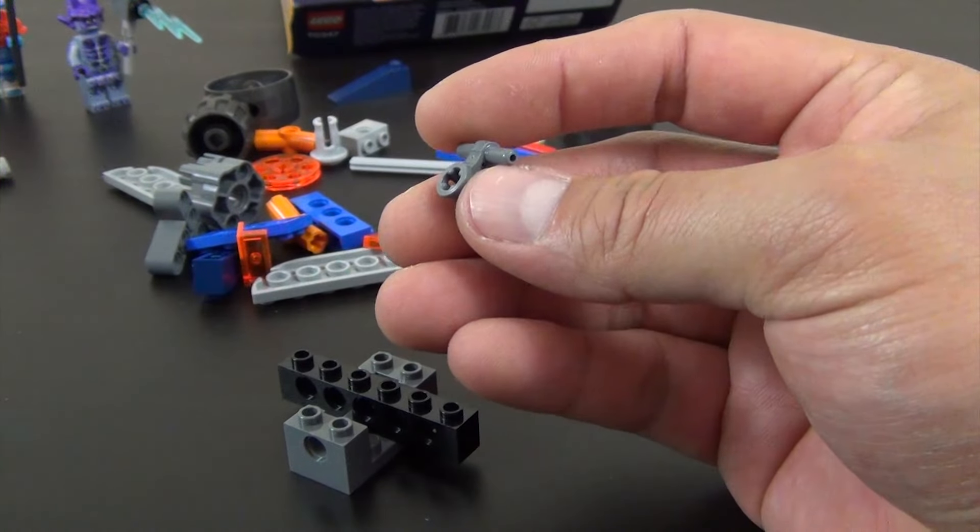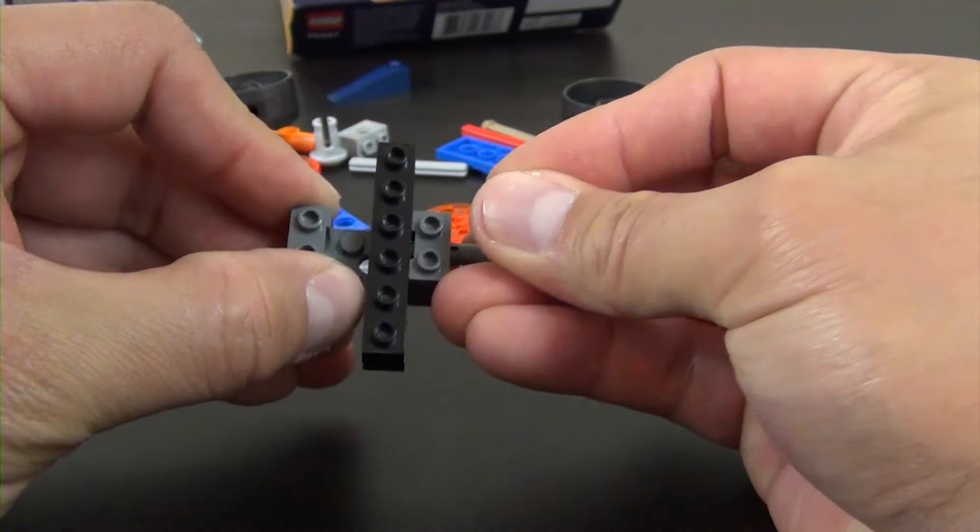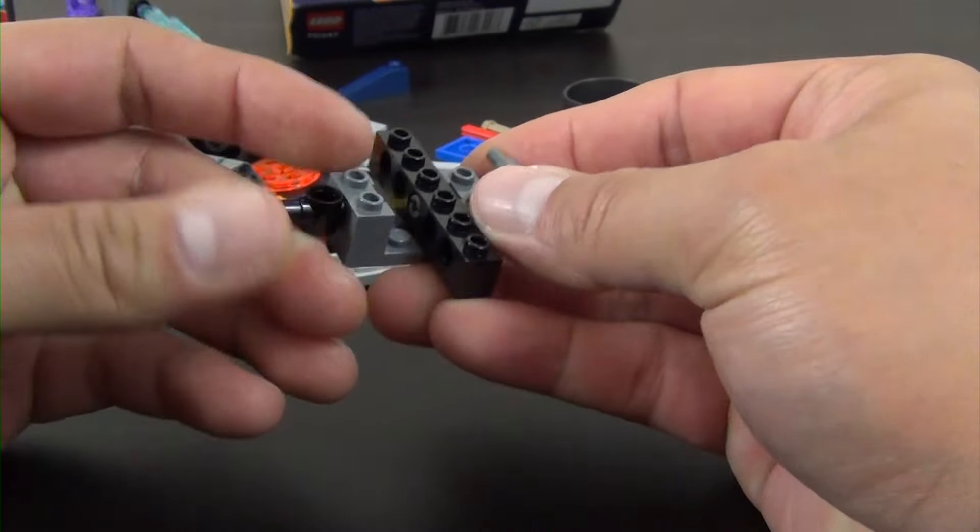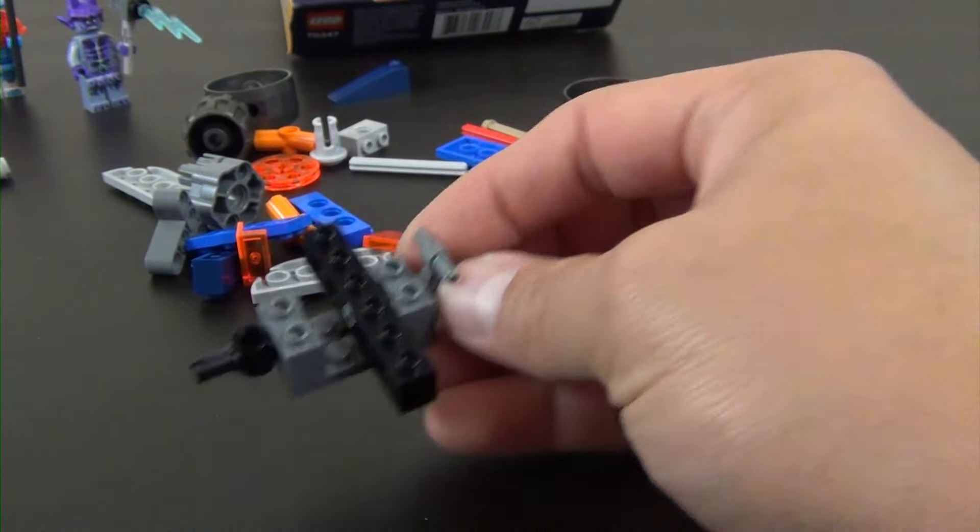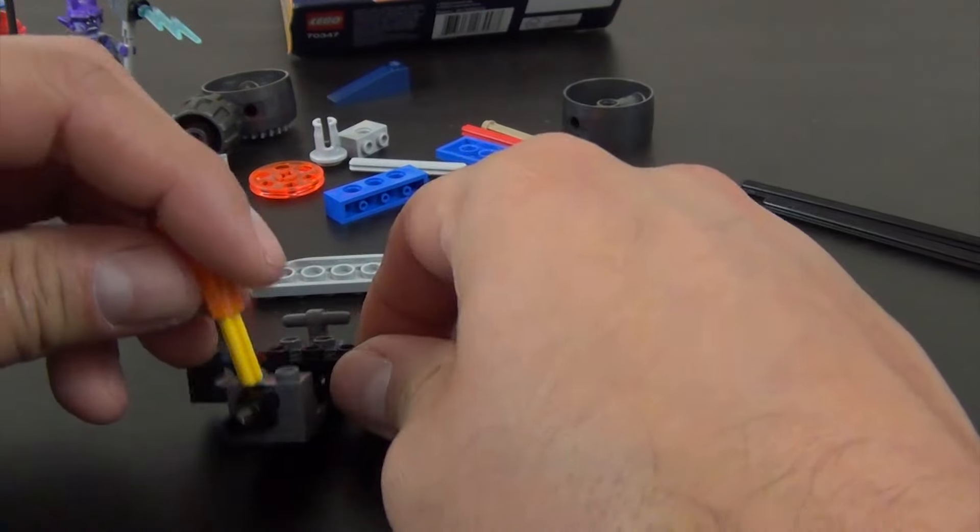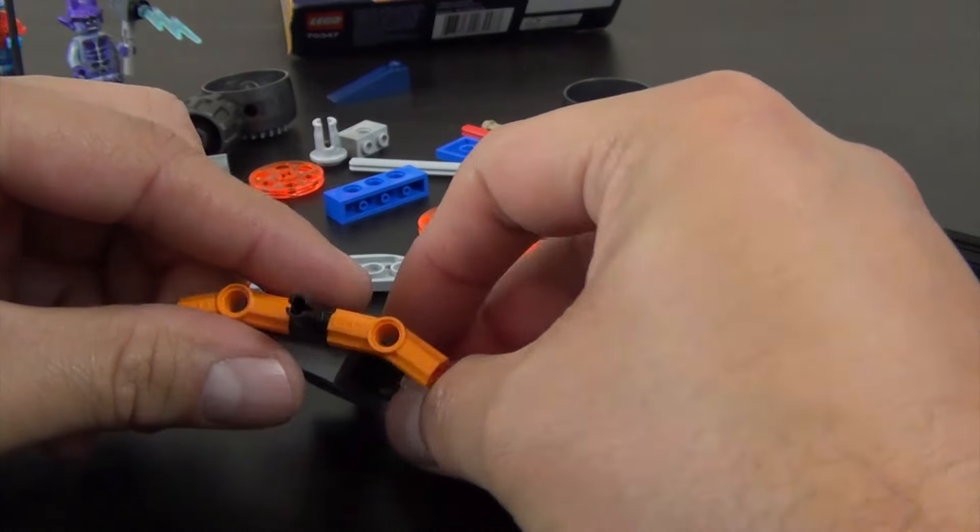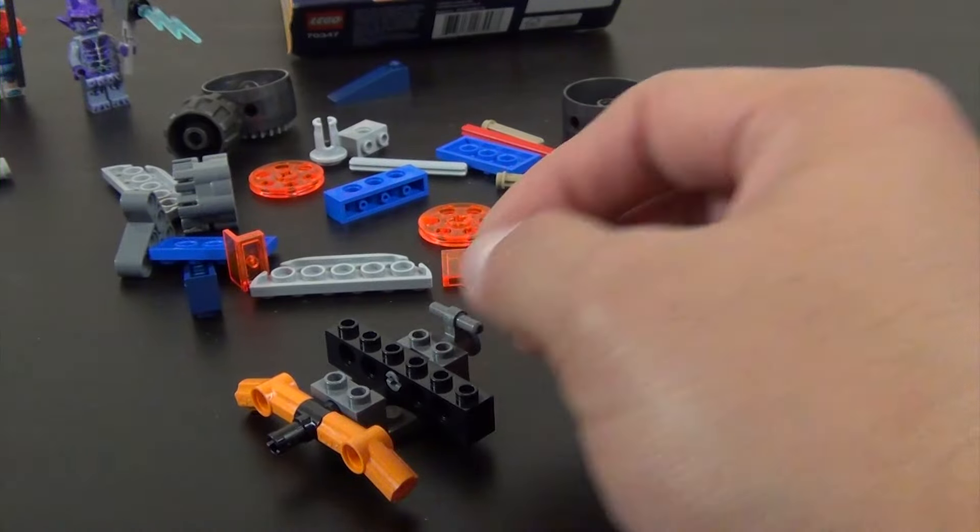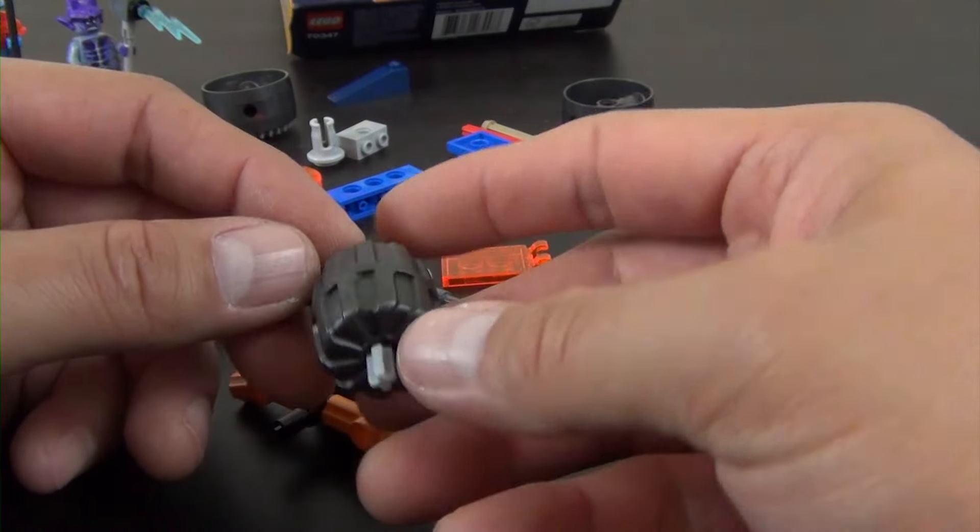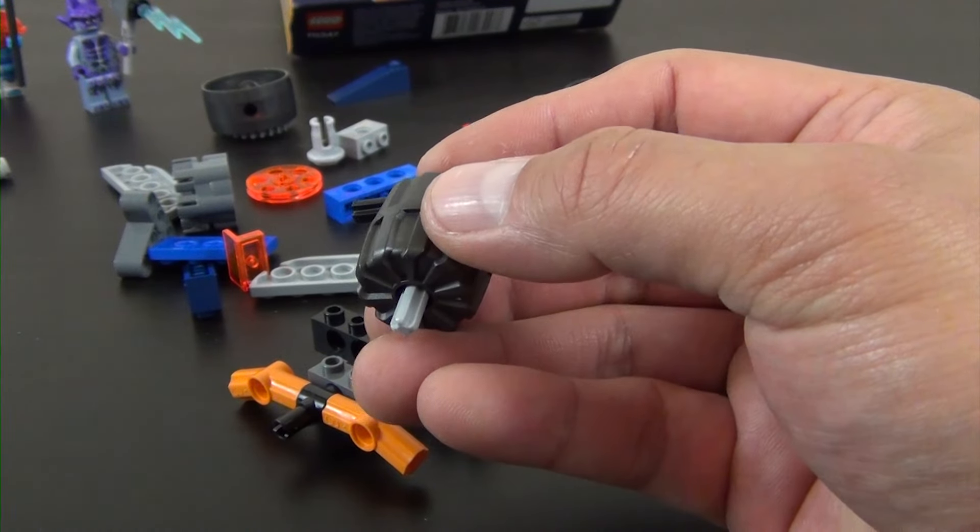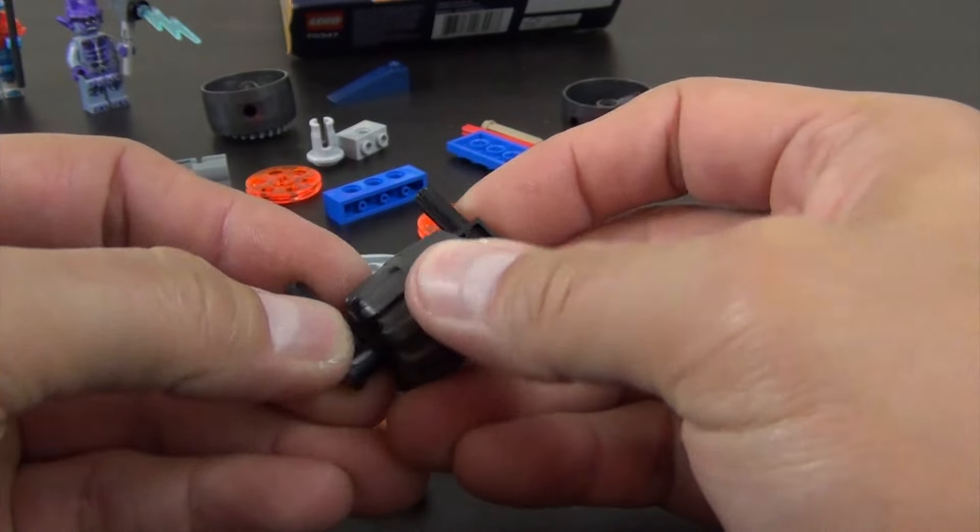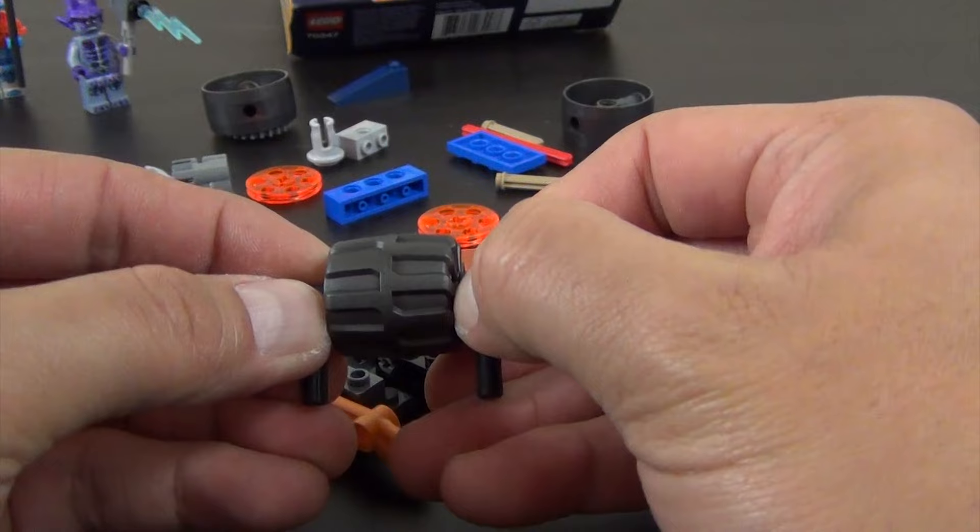All right, we have this pneumatic T piece, slides through here. Another technic part, so all of these pieces that we've started with are some variation of technic. Looks like we've got some more technic pieces. Side to there, this go here. All right. Who knew we were buying a technic set, this is all technic. Now we have a LEGO wheel piece. So we'll go here.